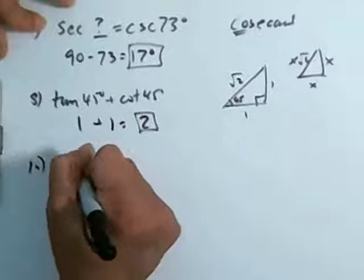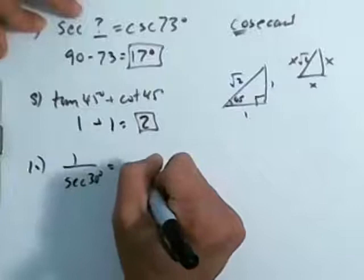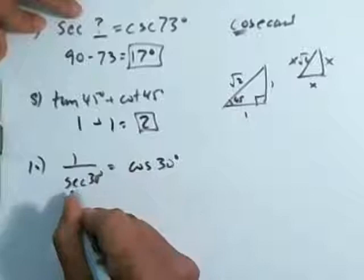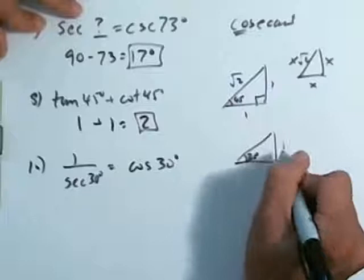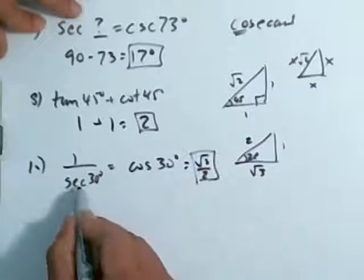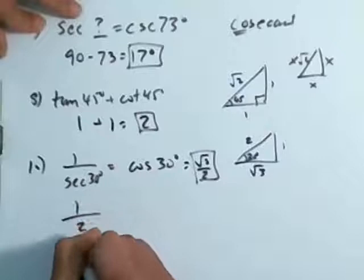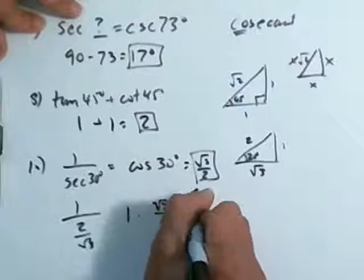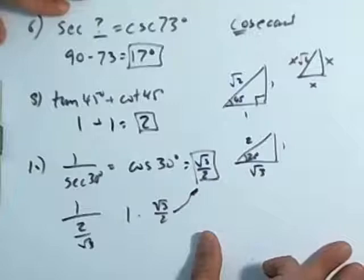Number 10: I want you to figure out 1 over the secant of 30 degrees. That's the same thing as the cosine of 30 degrees, because secant and cosine are reciprocal functions. If you draw a triangle with the 30 degree mark, it's going to be 1, 2, root 3. The cosine is adjacent over hypotenuse — root 3 over 2. Or what I could have done is taken the secant, which is 2 over root 3, and computed 1 divided by 2 over root 3, which is the same thing as root 3 over 2. I know I'm going a little bit fast, so digest the information and try to work it out again before you take the actual test.